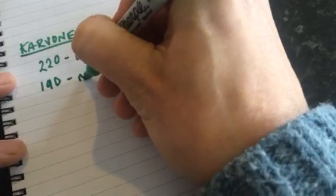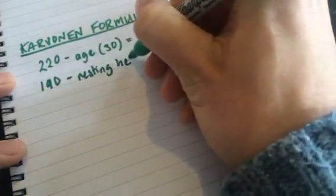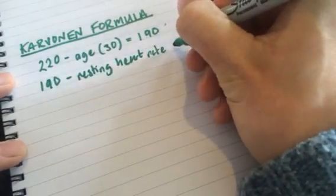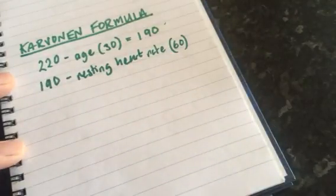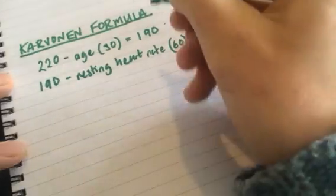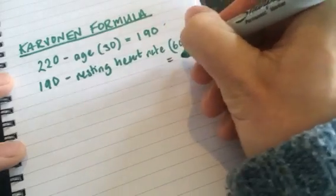We take 190, but we take away our resting heart rate. I'm going to assume for now that my resting heart rate is 60. So if I do my 190 minus 60, I'll just do it down here, that equals 130.